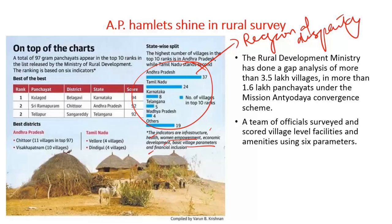The outcomes of the survey also indicate regional disparity existing in India. Of the villages present in the top 10 ranks, Andhra Pradesh has 37 villages, Tamil Nadu has 24, Karnataka has 8, and Telangana has 5. Of the total 97 gram panchayats appearing in top 10 ranks, only 23 are being shared by north Indian states. This confirms the regional disparity of development between north and southern India, and this survey is an important step toward cutting down that disparity.